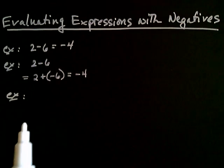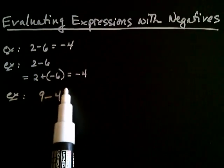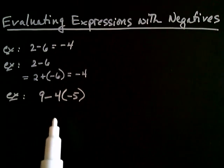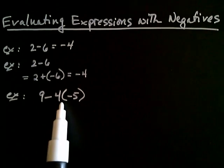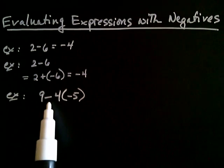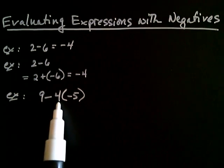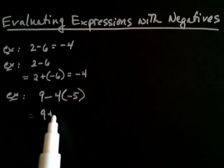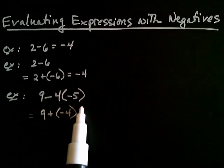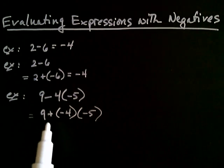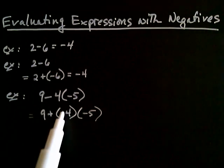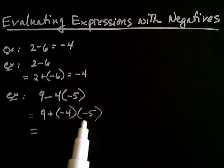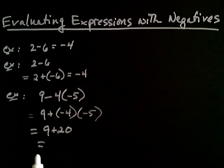Let's say that you had 9 minus 4 times negative 5. When there's multiplication, you can convert subtraction to addition and put the negative with the 4 that follows, making it negative 4 times negative 5. Negative 4 times negative 5 is 20, so it becomes 9 plus 20, which equals 29.